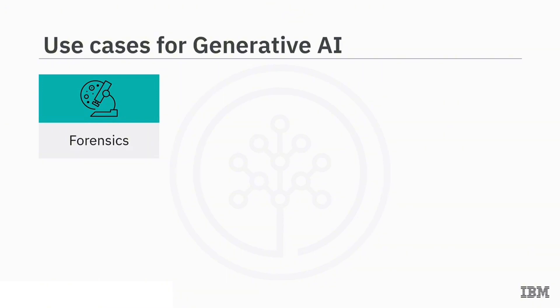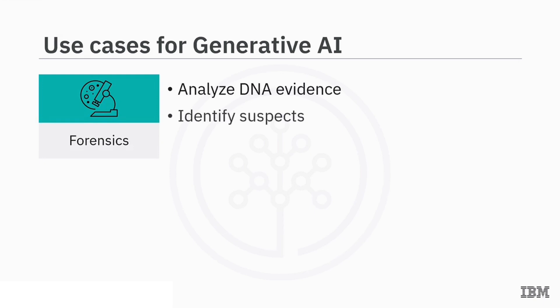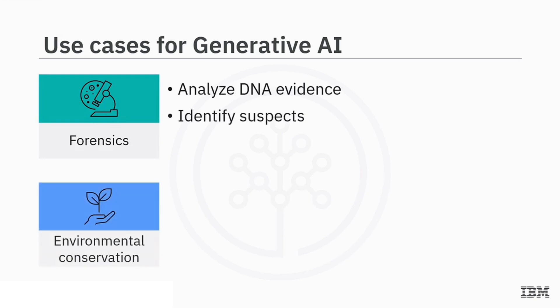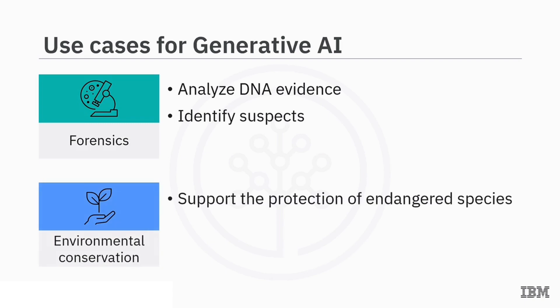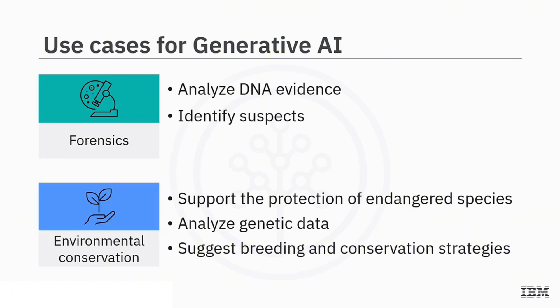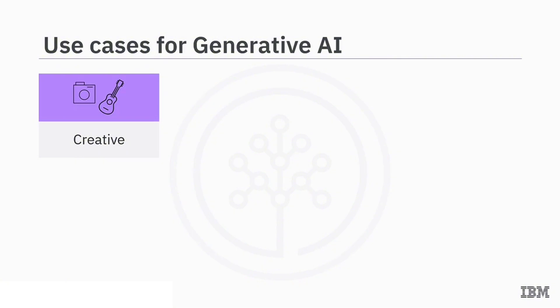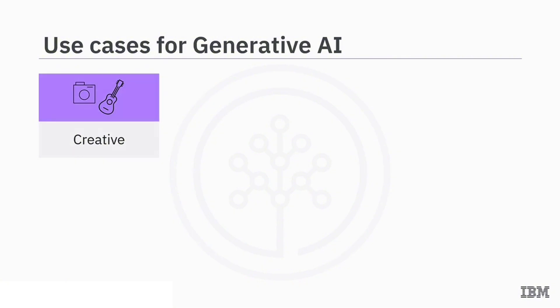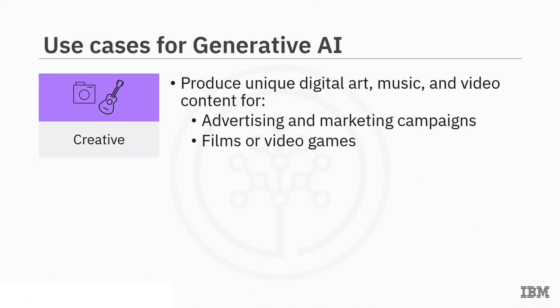In forensics, generative AI can help solve crimes by analyzing DNA evidence and identifying suspects. In environmental conservation, it can support the protection of endangered species by analyzing genetic data and suggesting breeding and conservation strategies. In creative fields, generative AI can produce unique digital art, music, and video content for advertising and marketing campaigns, and generate soundtracks for films or video games.